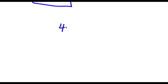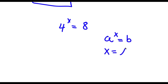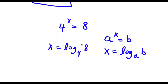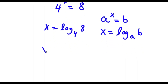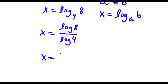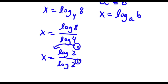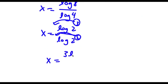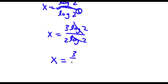Another way of solving this is using logarithms. If a to the power of x equals b, then x equals log base a of b. So x equals log base 4 of 8, which by the change of base formula equals log 8 over log 4. Since 8 equals 2 to the power of 3 and 4 equals 2 to the power of 2, I have log of 2 cubed over log of 2 squared, which equals 3 log 2 over 2 log 2. The log 2 terms cancel, again giving x equals 3 over 2.